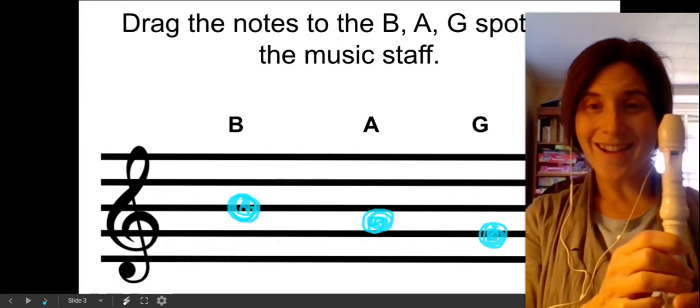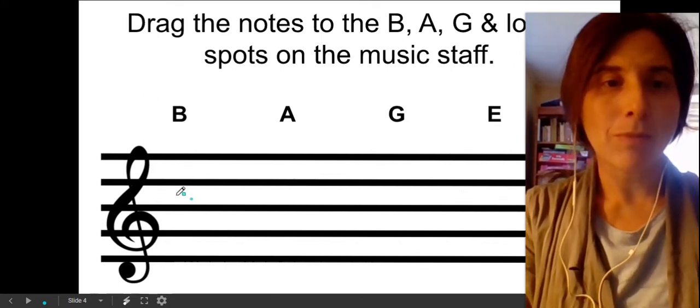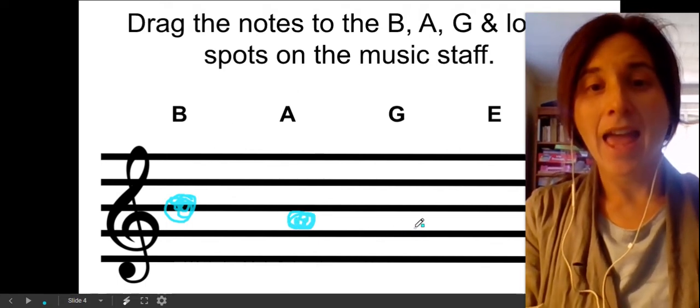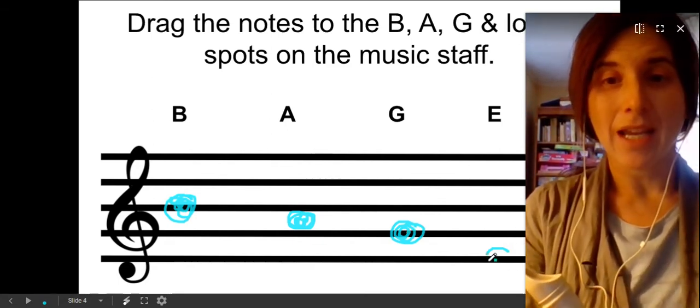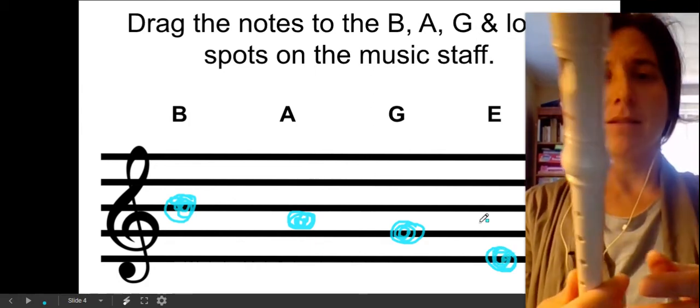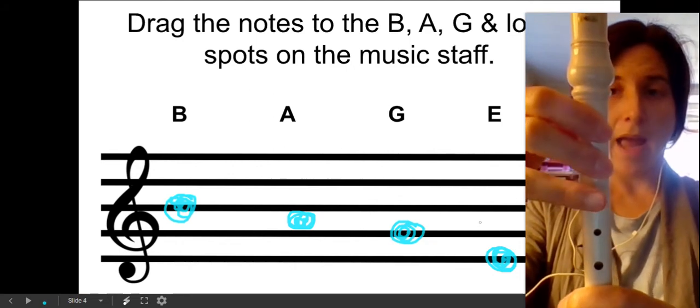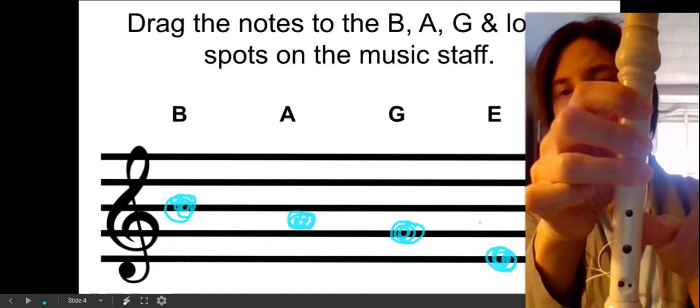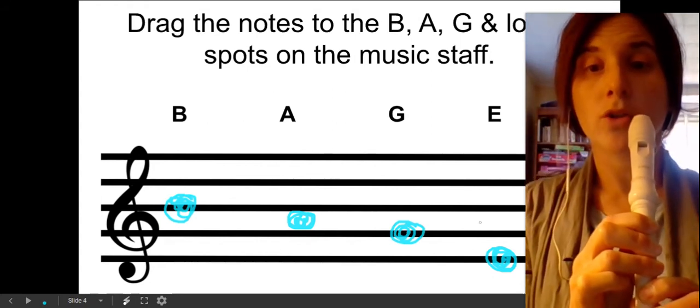Great job. Now let's add another note. We just played B, and we played A, and we played G. When you get to the fourth song, Skin and Bones, we have a note E. Let's just try and get a sound with E. E is left hand thumb, one, two, and three. And then with your right hand, you have to put down two fingers. So that's G, and that's E. You have to blow super duper lightly.